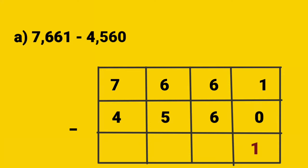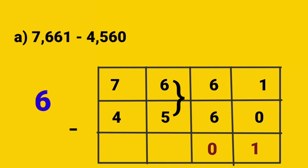Move to the 10's place: 6 minus 6, so 6 minus 6 is equal to 0. Next we have to subtract the 100's place: 6 minus 5. Now we can subtract 5 from 6, so we get the answer 1.